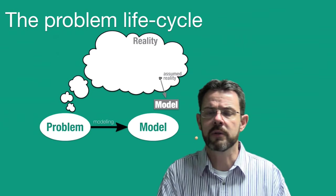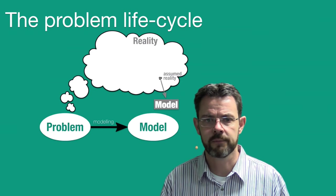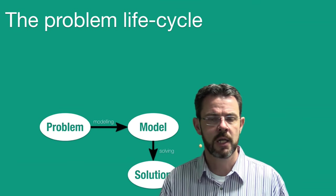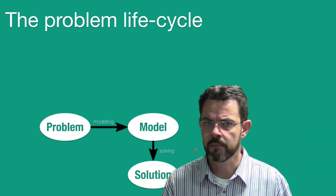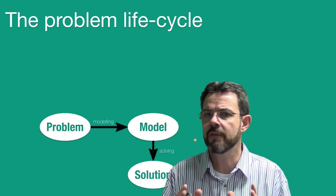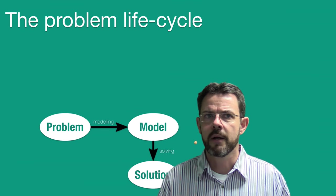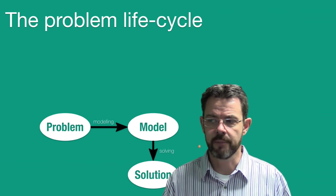until we get to this agreed upon version that we call the model, which is now what we will take forth for the rest of the problem life cycle. And once you have a model, you can go further and solve it. But take note that you solve the model, you don't solve the problem. You solve this abstraction of reality, so you have to make sure that this model is worth solving in the first place, that it is a good enough representation of reality.